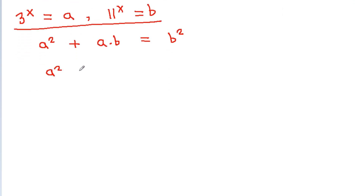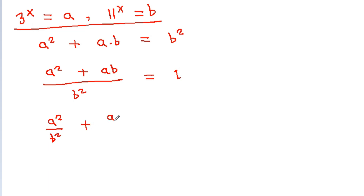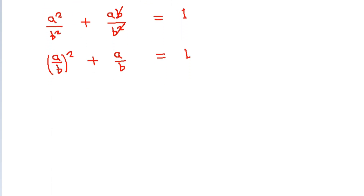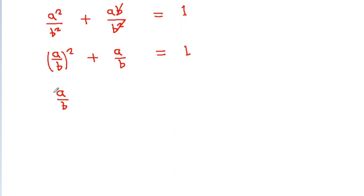Dividing through by b², we get (a²/b²) + (a/b) = 1, which simplifies to (a/b)² + (a/b) - 1 = 0.